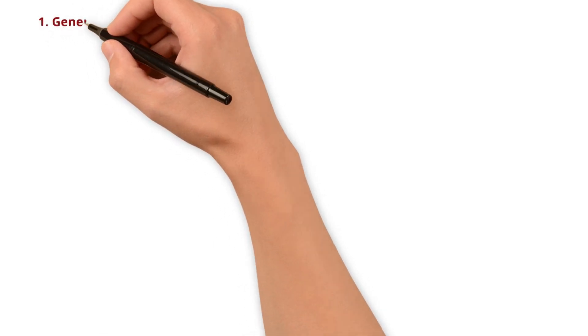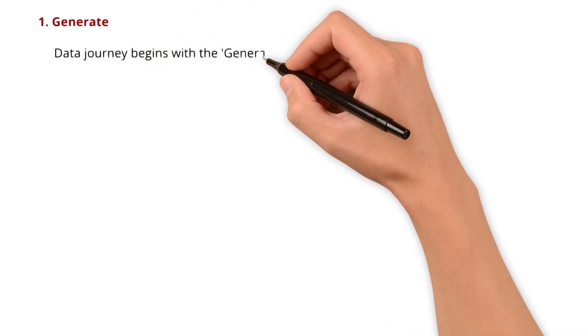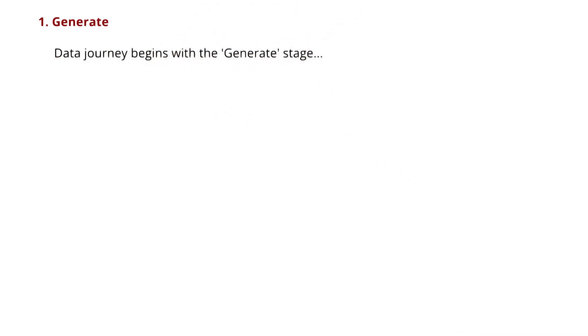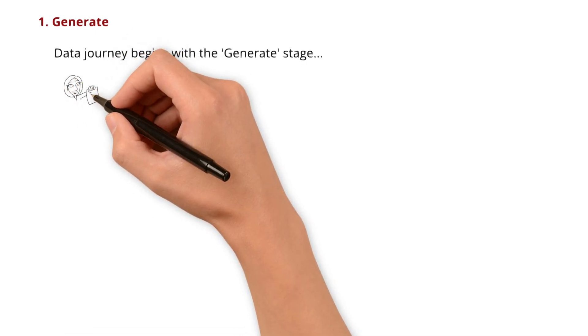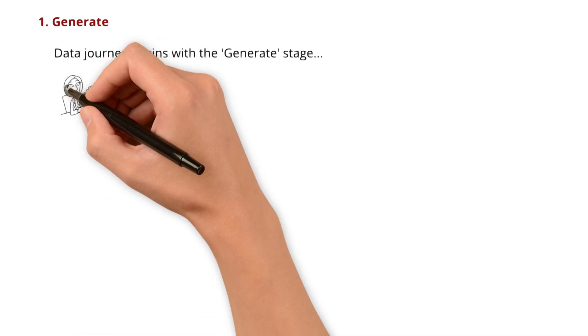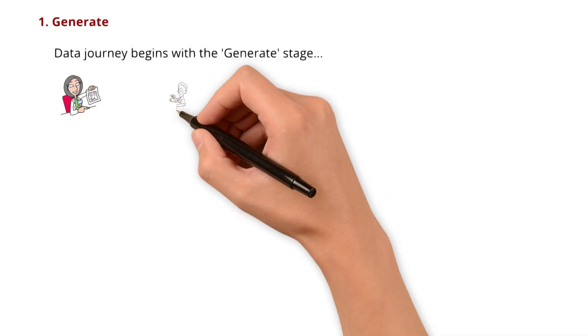Alright, let's dive into these stages now. First one: generate. Every data journey begins with a generate stage. Meaning, the data must be generated in the first place to kick off its lifecycle. This data generation happens all the time throughout business operations, sometimes without us even realizing it, thanks to the digital world.